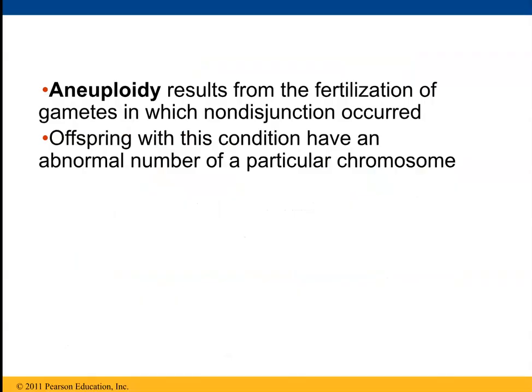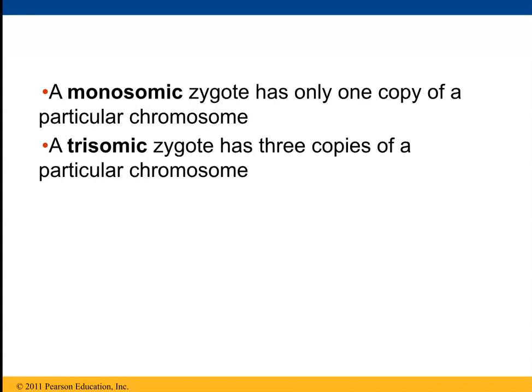We call any resultant fertilized gamete that has the wrong number of chromosomes due to nondisjunction aneuploid. Offspring with this condition have an abnormal number of chromosomes and therefore the associated syndrome. In plants, this is more tolerated, where you could have triploid or tetraploid.